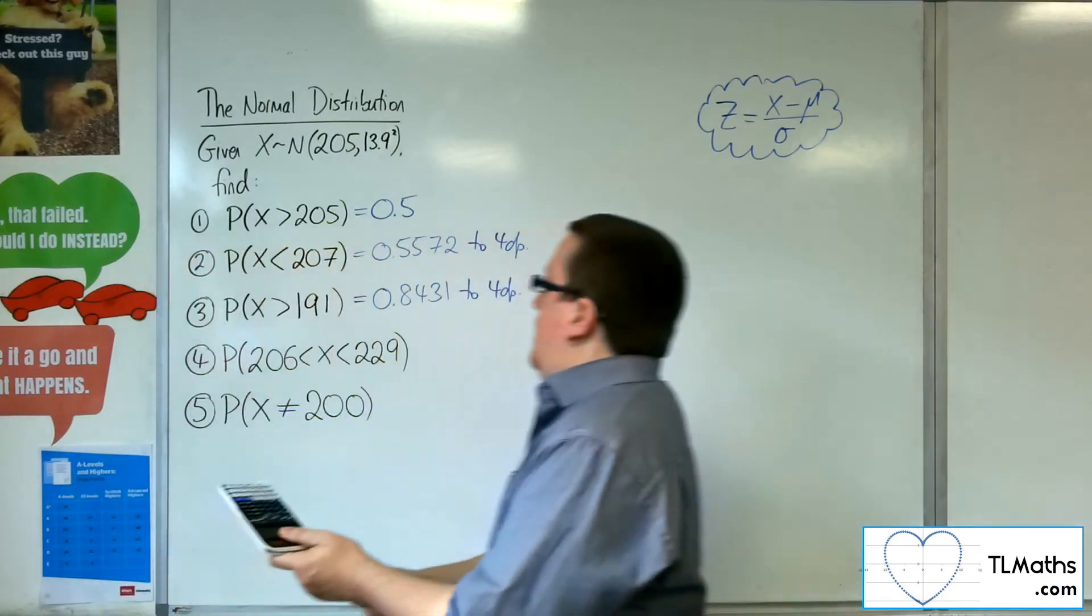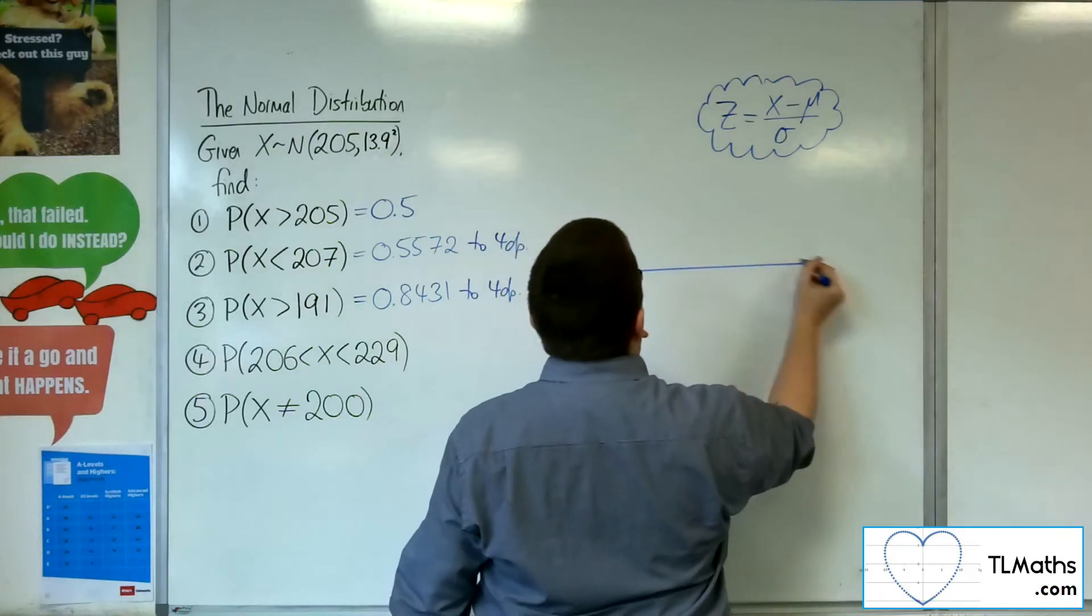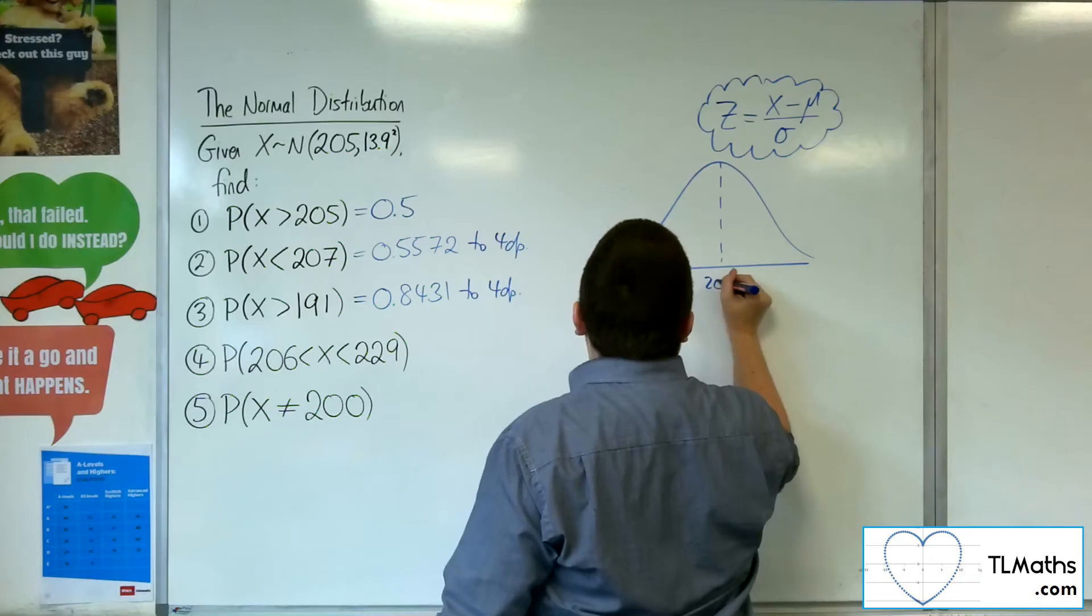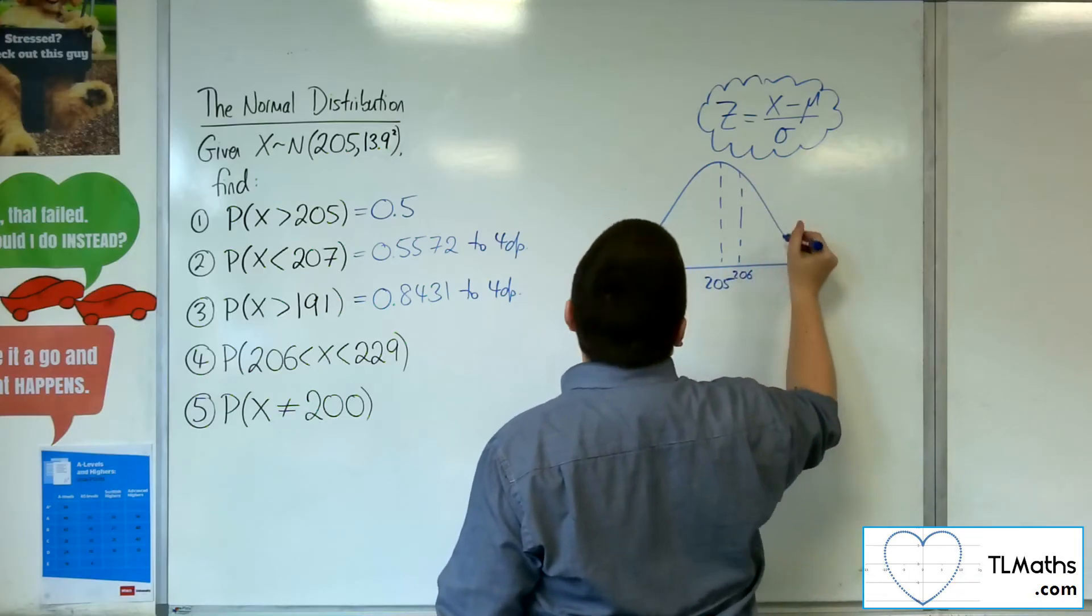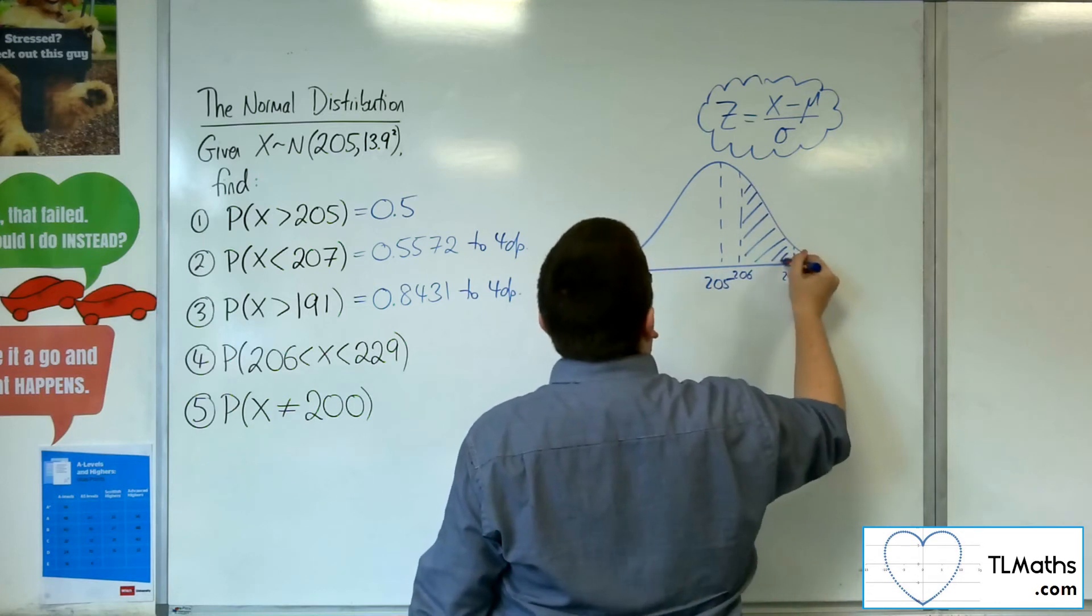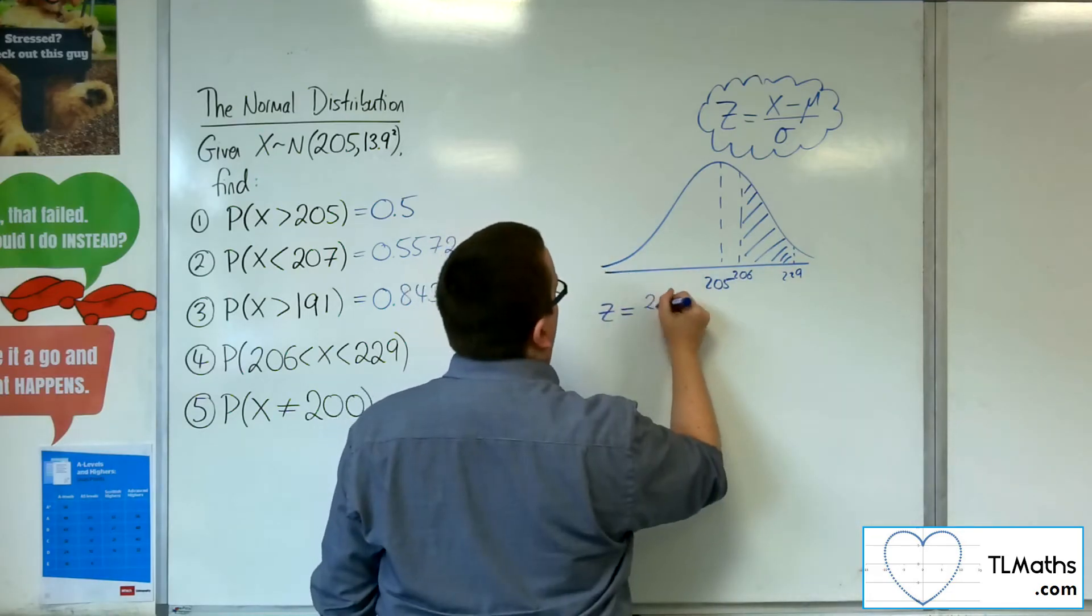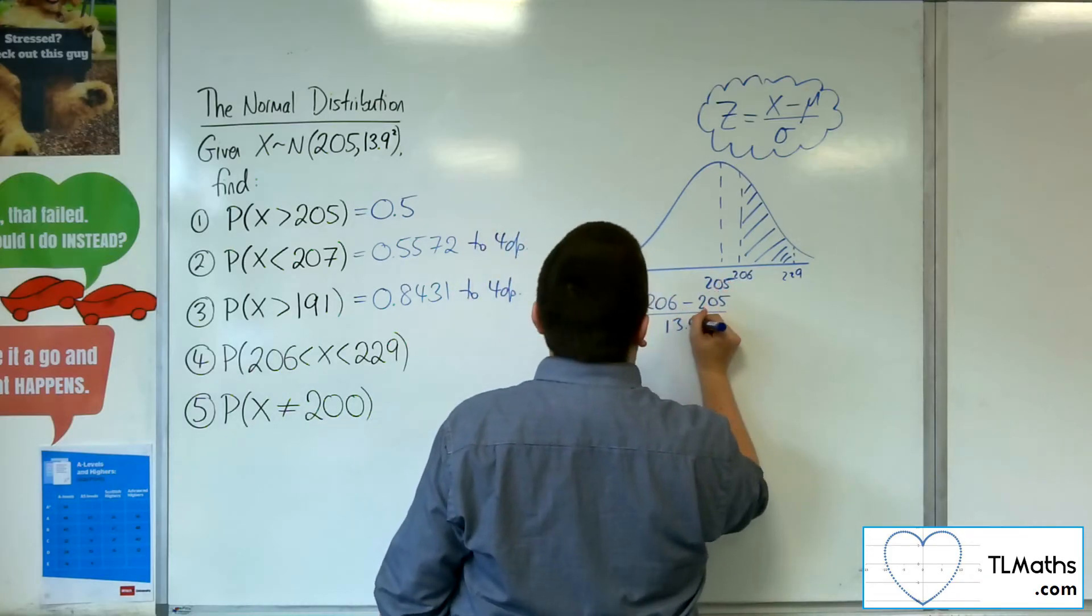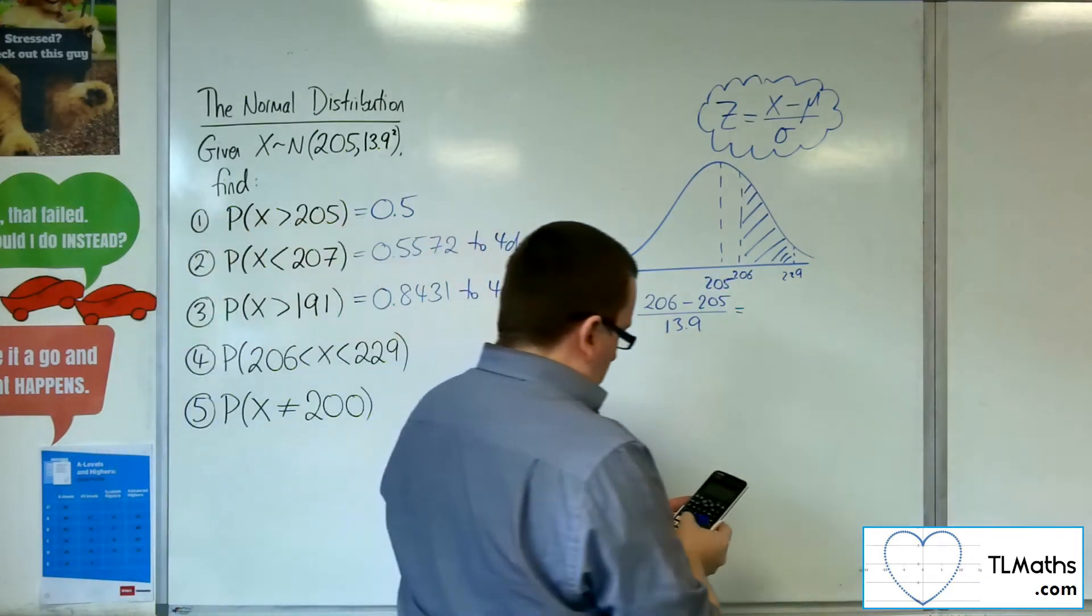Number four, probability of X being between 206 and 229. So we want to go 205, 206 is there and 229 is here, and we want that area. So I would need to calculate two z-values for that. So 206, take away the mean, divided by the standard deviation.